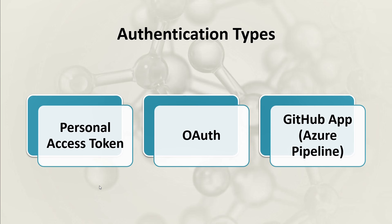Basically there are three authentication types: personal access token, OAuth, and GitHub application. PAT or personal access token is the oldest one, which was used for the integration of Azure pipelines with GitHub.